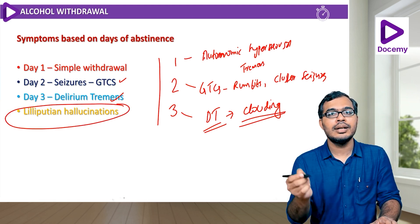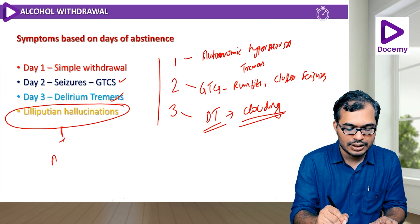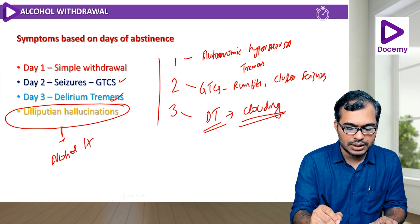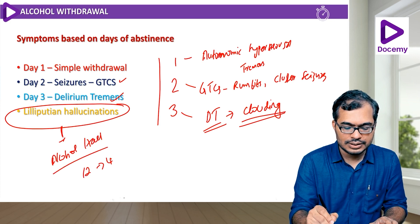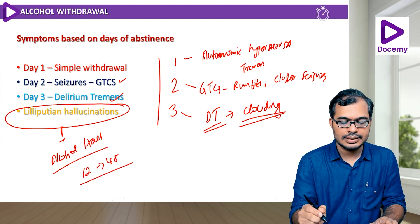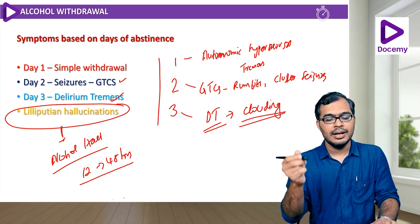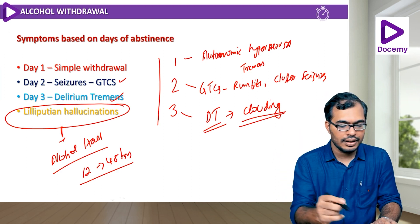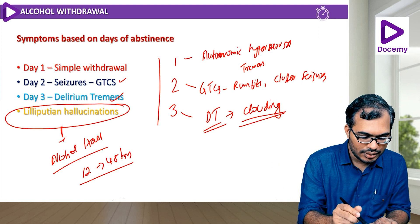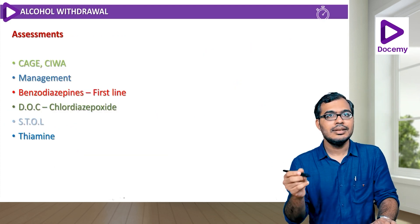Lilliputian hallucinations are characteristic of alcohol hallucinosis. Alcohol hallucinosis usually happens between 12 to 48 hours of cessation. The patient will have Lilliputian hallucinations and some auditory hallucinations of derogatory content.